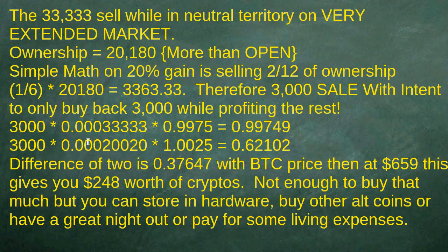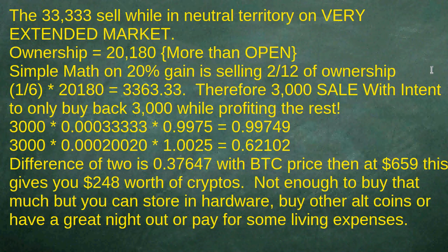On the buyback, if I'm buying 3,000 at this price and paying a quarter percent rate it's 0.62, so the differential is 0.37. With Bitcoin prices at 659, this gives you $248 worth of crypto — not enough to buy that much. You can store it in your hardware wallet, buy other altcoins, have a great night out, or pay for living expenses. But we're in the early stages of real profit taking, which happens at distribution levels.